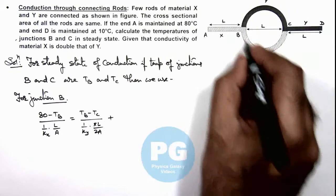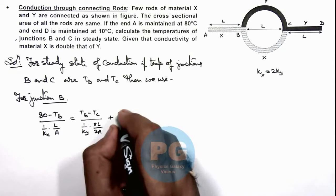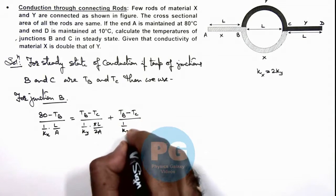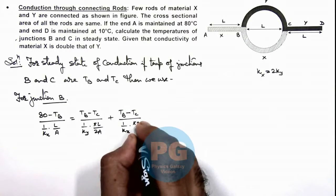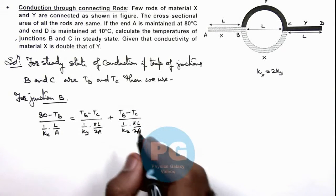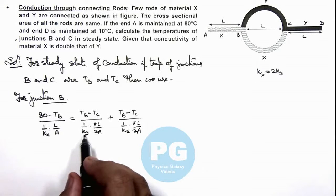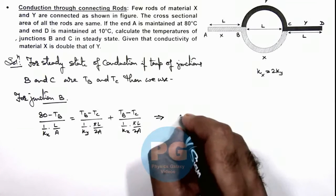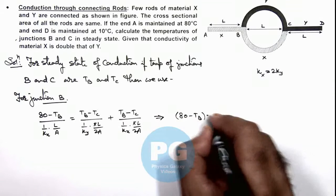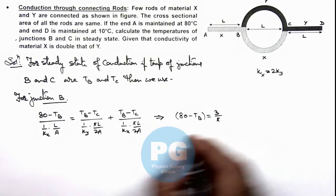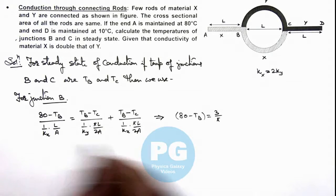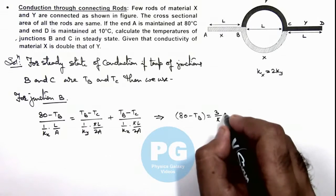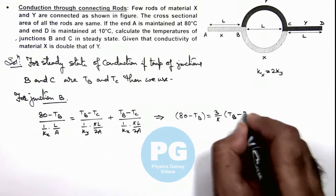So that can be written as TB minus TC divided by the resistance of this rod of material Y, which can be written as 1 upon ky multiplied by πL by 2A, plus the amount of heat conducted through material X, which is TB minus TC divided by 1 by kx multiplied by πL by 2A. Here we are given that the value of ky we can write as kx by 2. So simplifying this relation will be finally getting 80 minus TB is equal to 3 upon π times TB minus TC. This is equation 1.